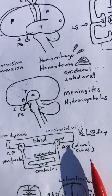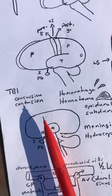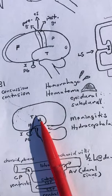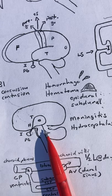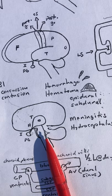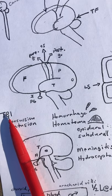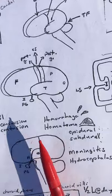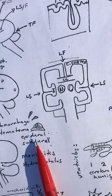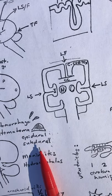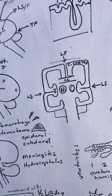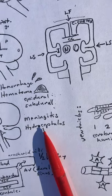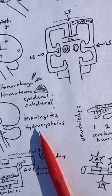We talked about a cutaway view in which we saw the thalamus, the hypothalamus, the infundibulum, and the pituitary gland. We saw the location of the fourth ventricle. We talked about traumatic brain injury, concussions, contusions, hemorrhage, hematoma, and epidural and subdural hematoma, and some of the problems they create with nervous tissue. We also talked about meningitis and hydrocephalus.